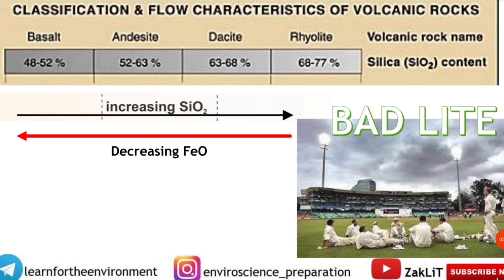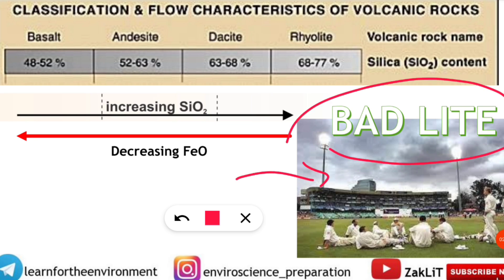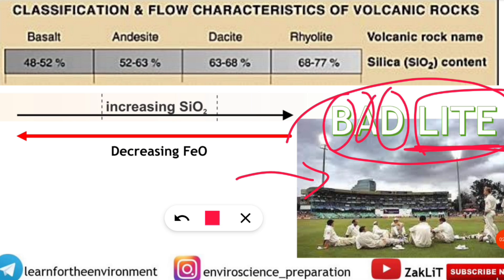Now comes the trick — how to remember this. On the right-hand side of the screen, you can see 'BAD LITE' and a cricket screen. We all know that when there is bad light, a cricket match is stopped. Notice it is spelled 'lite' not 'light' because there is a secret hidden in it. B-A-D stands for: B for basalt, A for andesite, D for dacite.